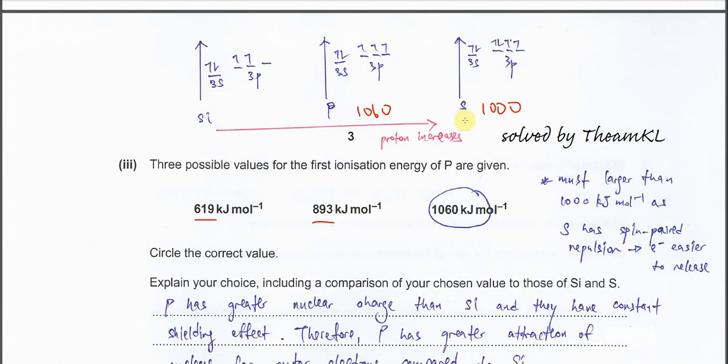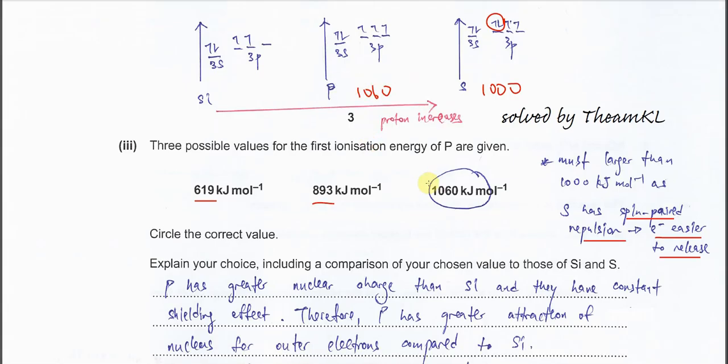Why does sulfur have lower first IE? Because there is a pair of electrons in the 3p orbital, and these electrons have repulsion, more specifically spin pair repulsion. This spin pair repulsion lets the electron release easier, therefore less heat is needed to release this electron. That's why the first IE of sulfur is lower than phosphorus.